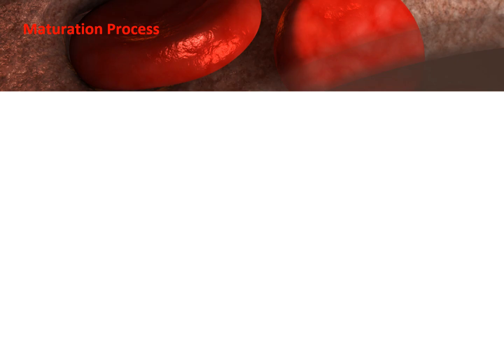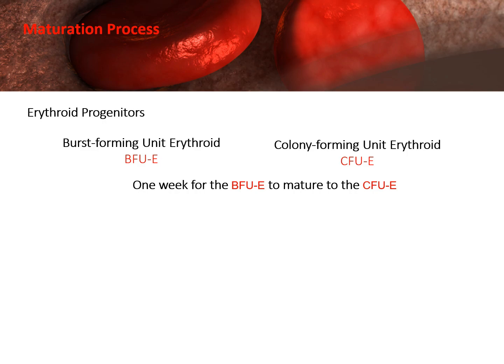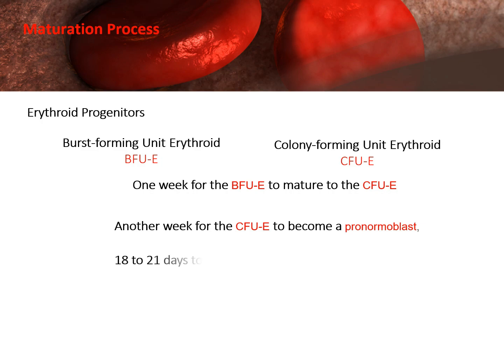First, we have the maturation process. We need to know that erythrocytes devolve from pluripotential stem cells that give rise to erythroid progenitors: burst-forming unit erythroid and colony-forming unit erythroid, both committed to the erythroid line. It takes approximately one week for the burst-forming unit erythroid to mature to the colony-forming unit erythroid, and another week for the colony-forming unit erythroid to become a pronormoblast, so approximately 18-21 days are required to produce a mature RBC from the burst-forming unit erythroid.